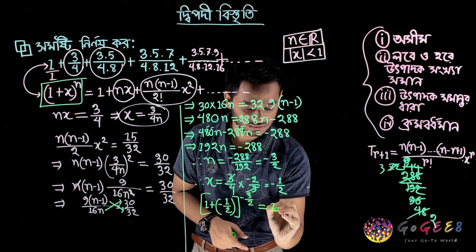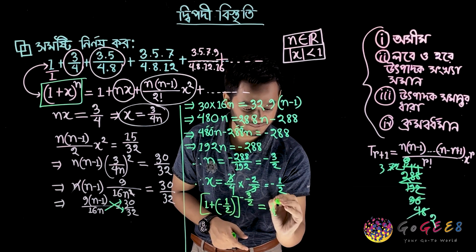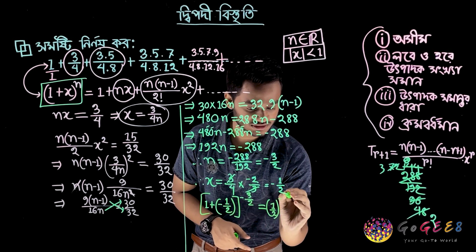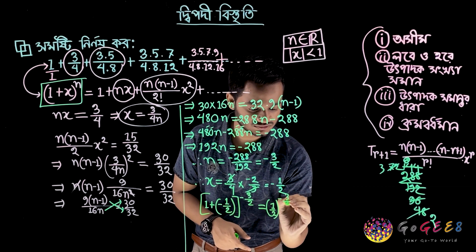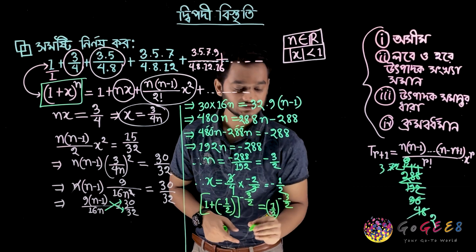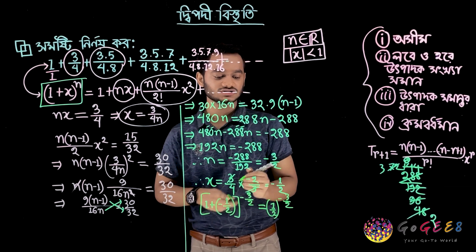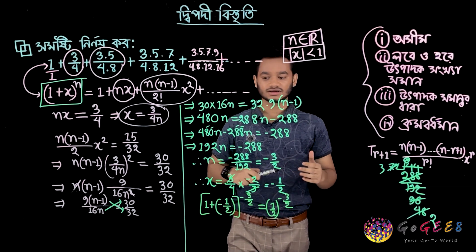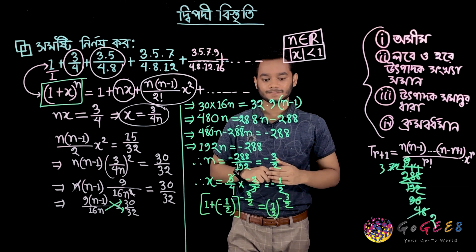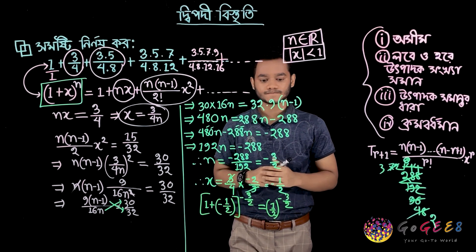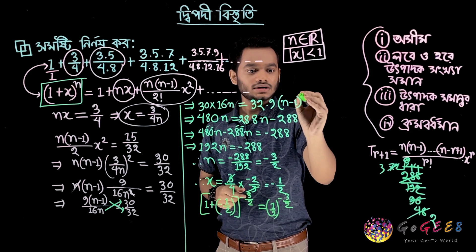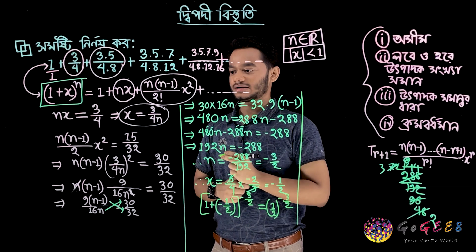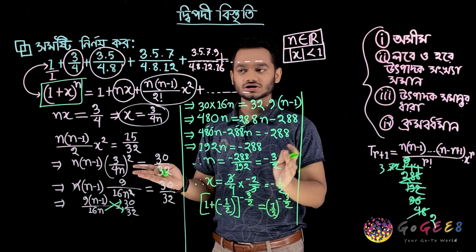That means, ultimately, 1 plus or minus half. That means half to the power of 3 by 2. That means, you can do the calculation.